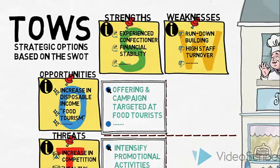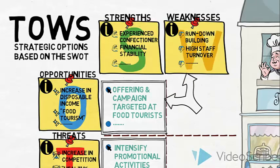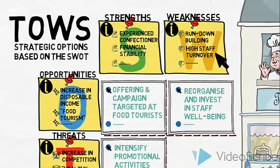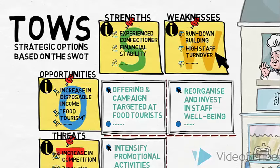Let us move on to see what strategic options our weaknesses and opportunities could create. We could reorganize and invest in staff well-being in order to create a more consistent and positive café experience for our customers. If we are to take advantage of the general increase in disposable income and trends in our favor, then we will need to minimize our weakness of poor staff retention rates.